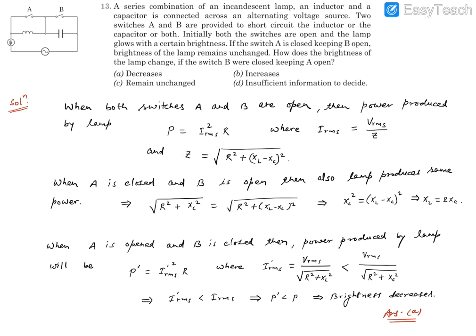Now when switch A is closed, this inductor will become short circuited. Then the current will run from the lamp, then this part, then capacitor, and it won't run through this inductor because it is short circuited. So in this scenario it will become RC series circuit.